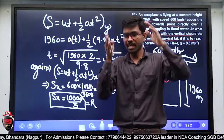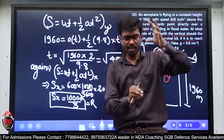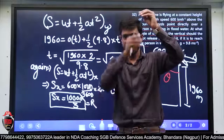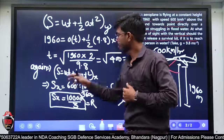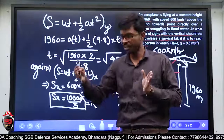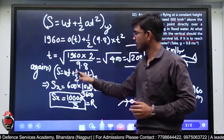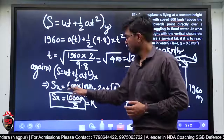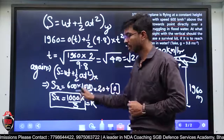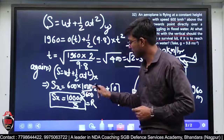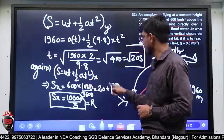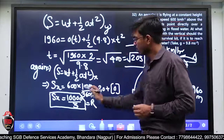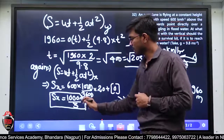Vertical का time मिल गया, horizontal का भी time same है — Tx = Ty, यह projectile motion में होता है। Displacement x direction के लिए equation लगाया: s = ut + ½at². Initial velocity in x direction 600 km/hr = 600×1000/3600 m/s, into time 20 seconds। Acceleration in x direction 0 है। Solve करने पर displacement in x direction = 10,000/3 meter मिला।